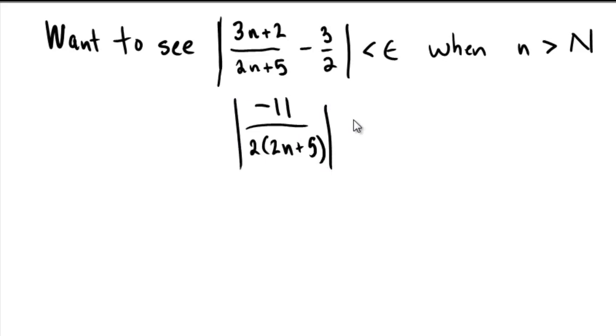So that's the quantity that we really want to make less than epsilon. Now notice that this isn't very pretty to work with. I can drop the negative 11 due to the absolute value, and on the bottom we have a 4n plus 10.